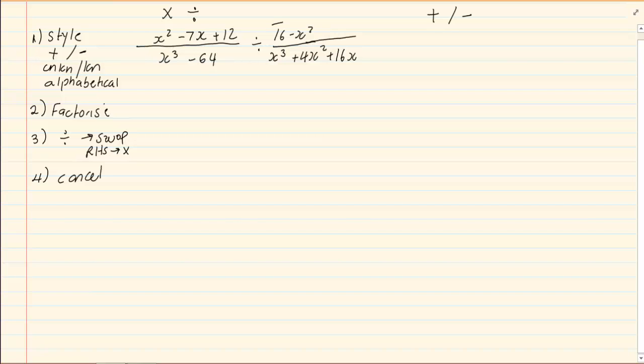Now, if you look at this question, you will notice that 16 minus x squared is not in the correct style. We have an unknown before unknown. So, let's take 16 minus x squared out. If we want it to be unknown before known, we end up with minus x squared plus 16. But now we have a problem with this plus and minus.